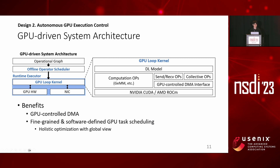Now we move on to autonomous GPU execution control. The figure shows our GPU-driven system architecture. Like other deep learning frameworks, the input is an operational graph describing the model architecture. We design an offline operator scheduler that analyzes the graph and generates a GPU loop kernel. In the loop kernel, we define all necessary computation operators and communication operators over our GPU-controlled DMA interface. This is the only kernel running on GPU during the entire runtime, enabling holistic optimization of computation and communication with a global view.